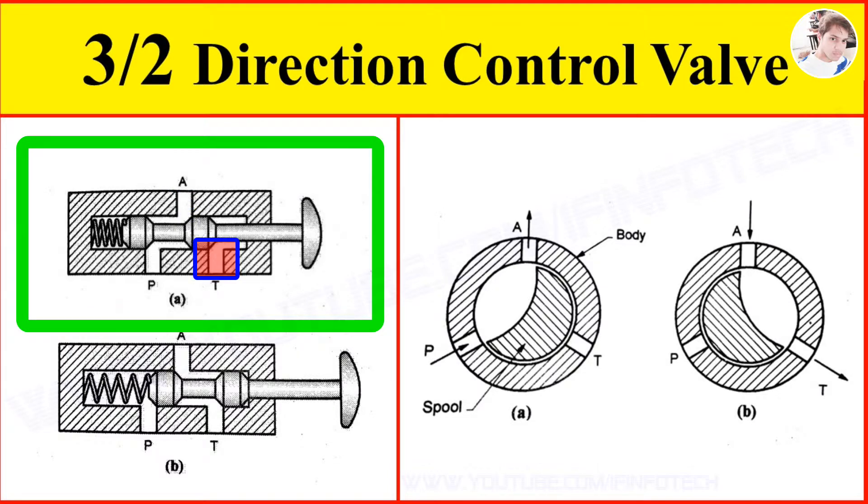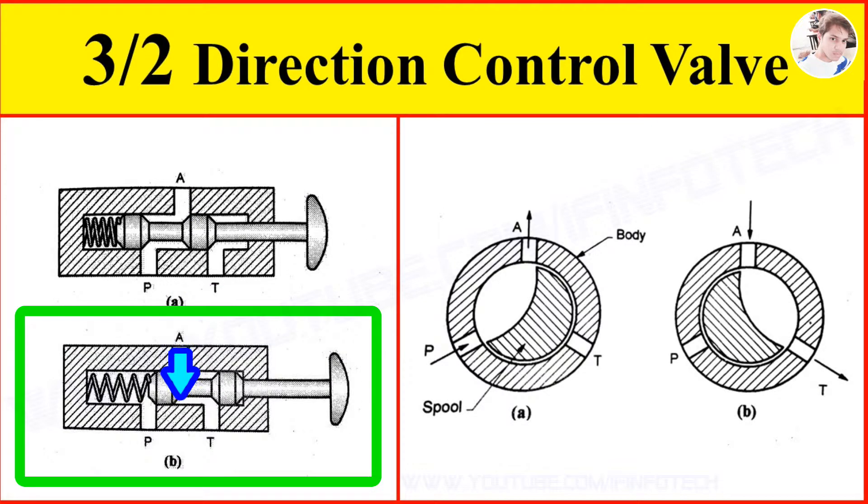The tank port T is closed. In the spooled position, as shown in figure B, there is a connection from port A to port T. Oil flows from the single acting cylinder to tank. Hence, the single acting cylinder retracts. Port P is closed.